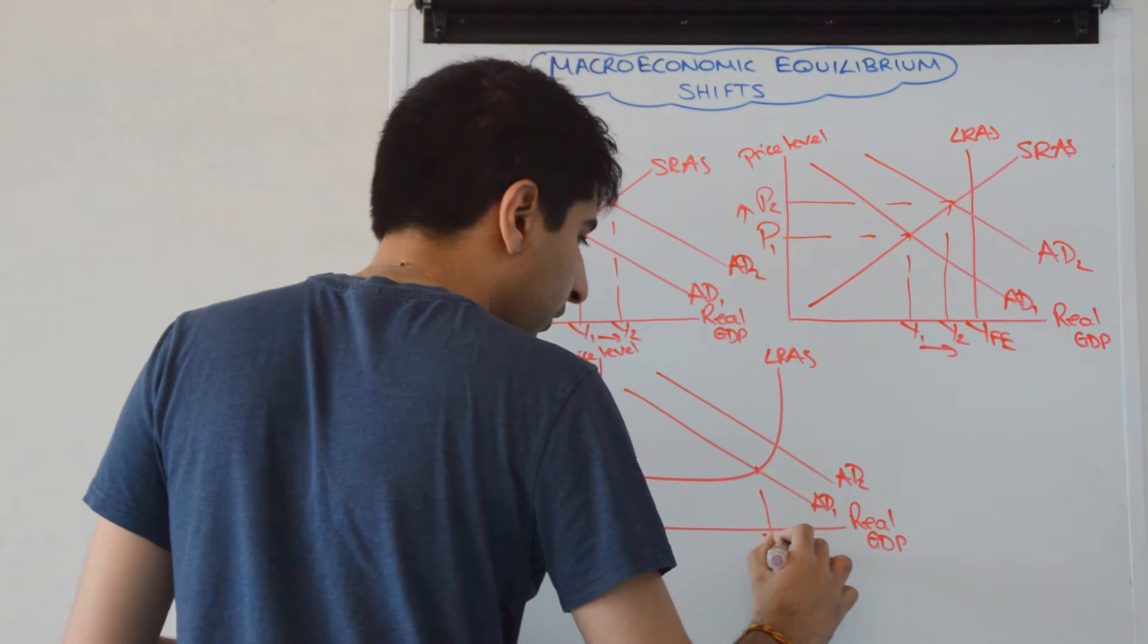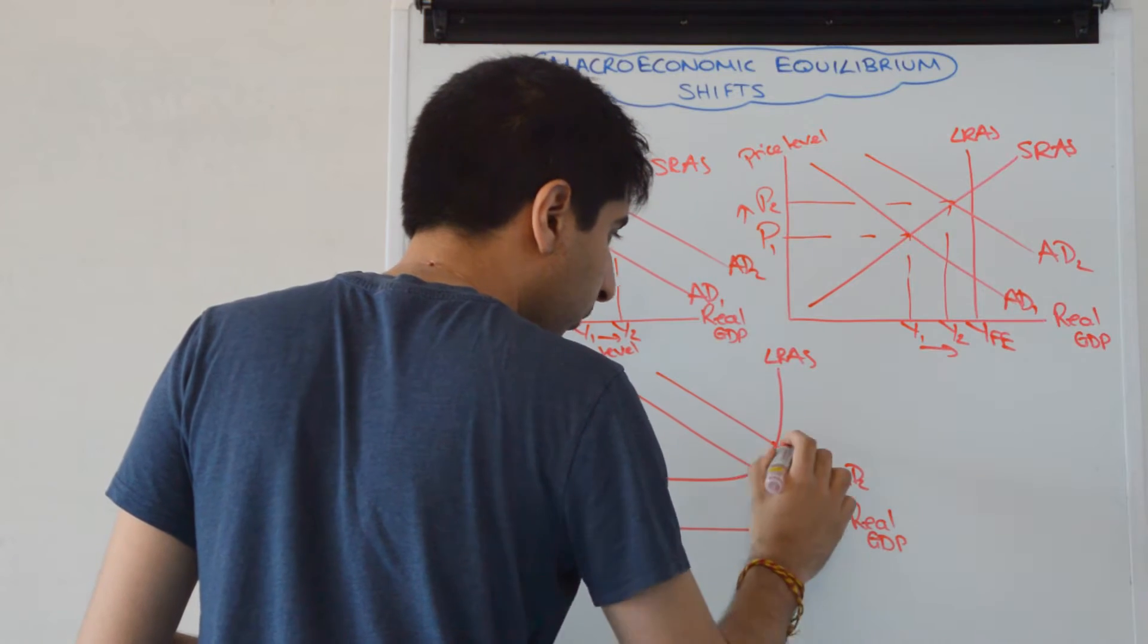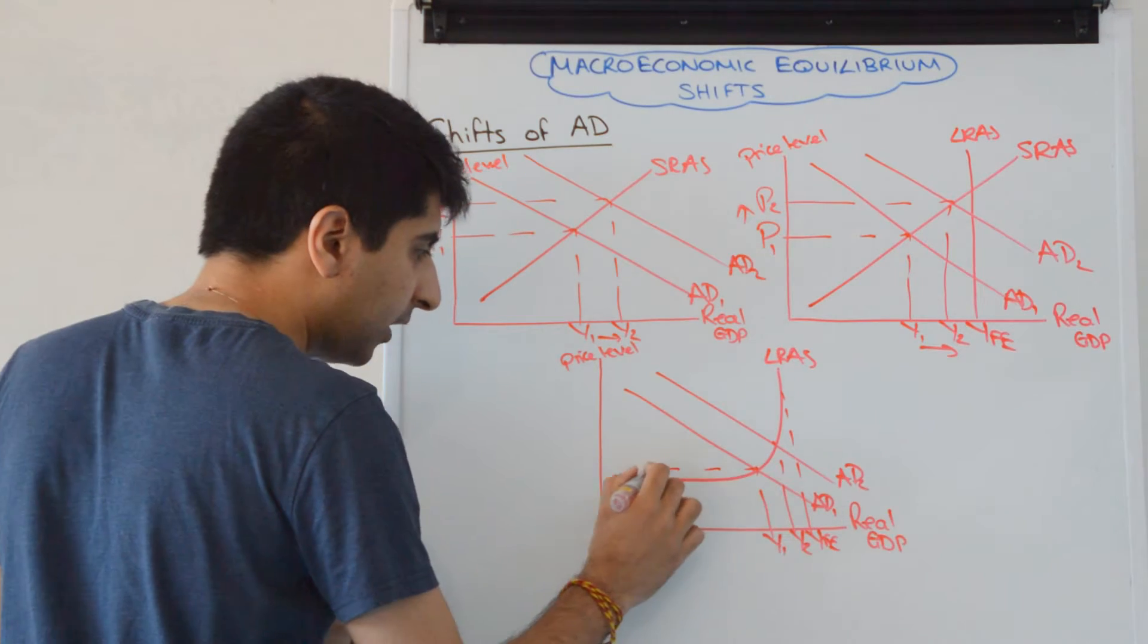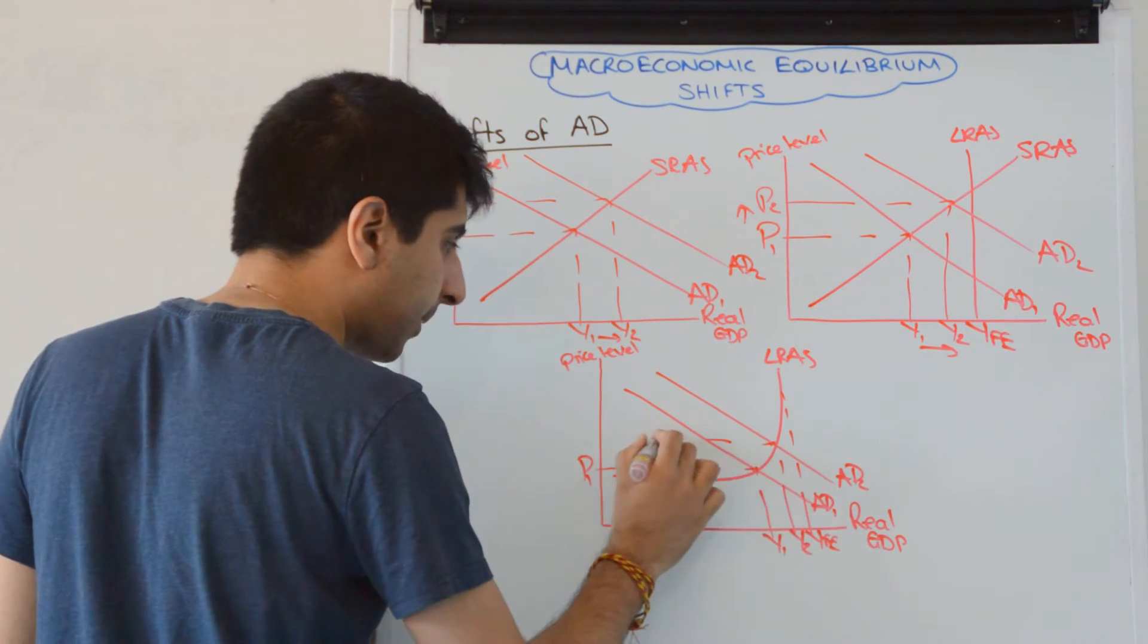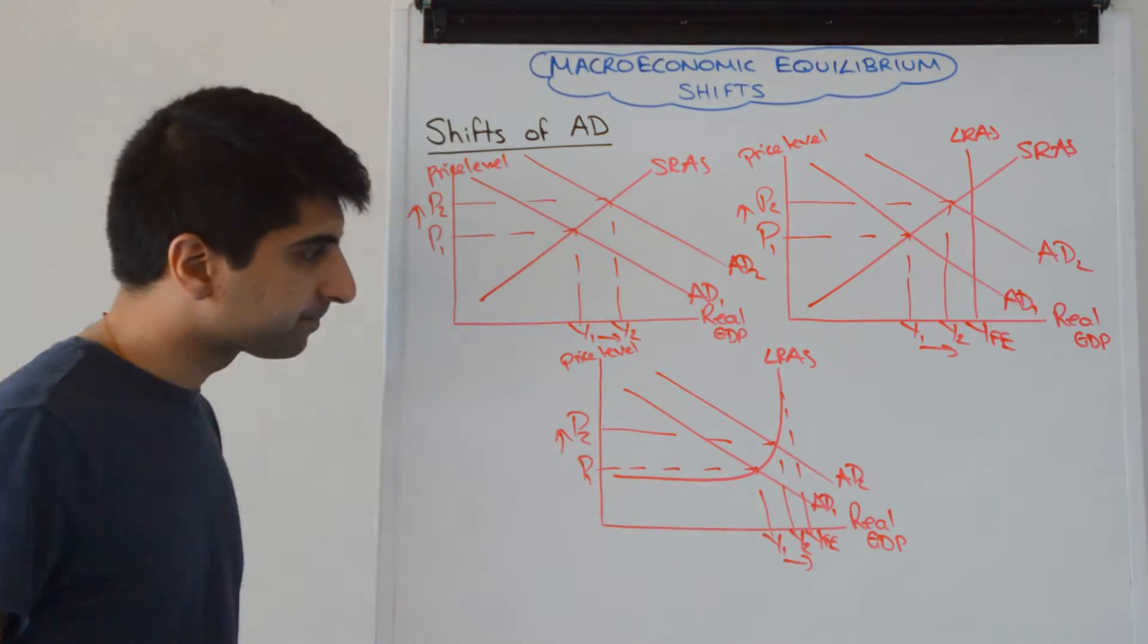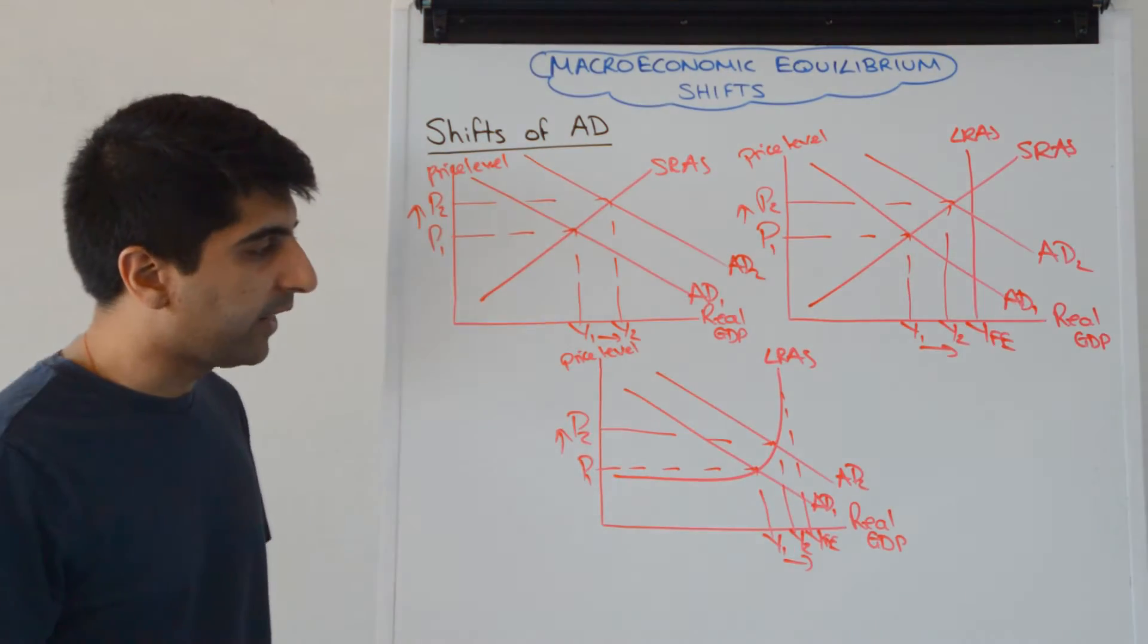So AD1 to AD2, we're seeing an increase in economic growth from Y1 to Y2, you've also got YFE, remember, don't forget to label that, and we're also showing an increase in demand pull inflationary pressure from P1 to P2, so very simple using Keynes right there.